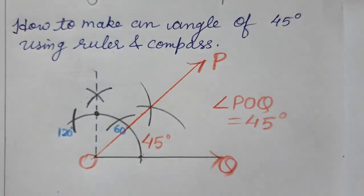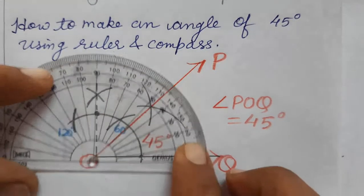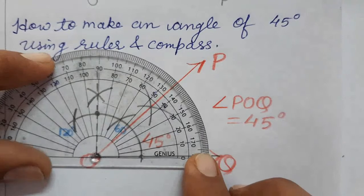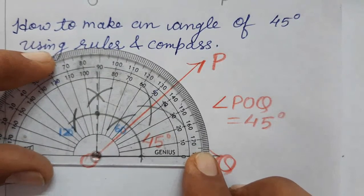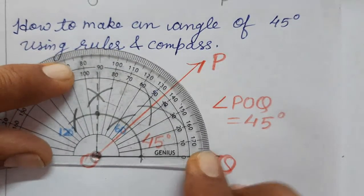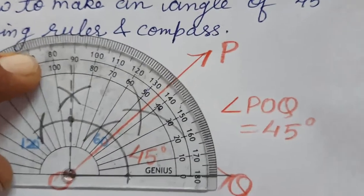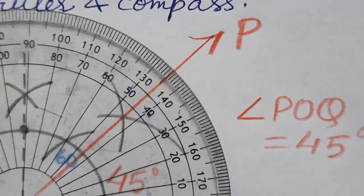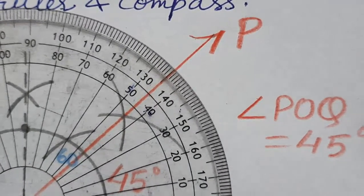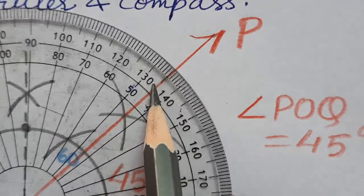And we can check it also with protractor or D. So see, we keep it here. 45 is between 40 and 50, you can check. Let me zoom the screen. So you will see between 40 and 50, the 45 line is coming.